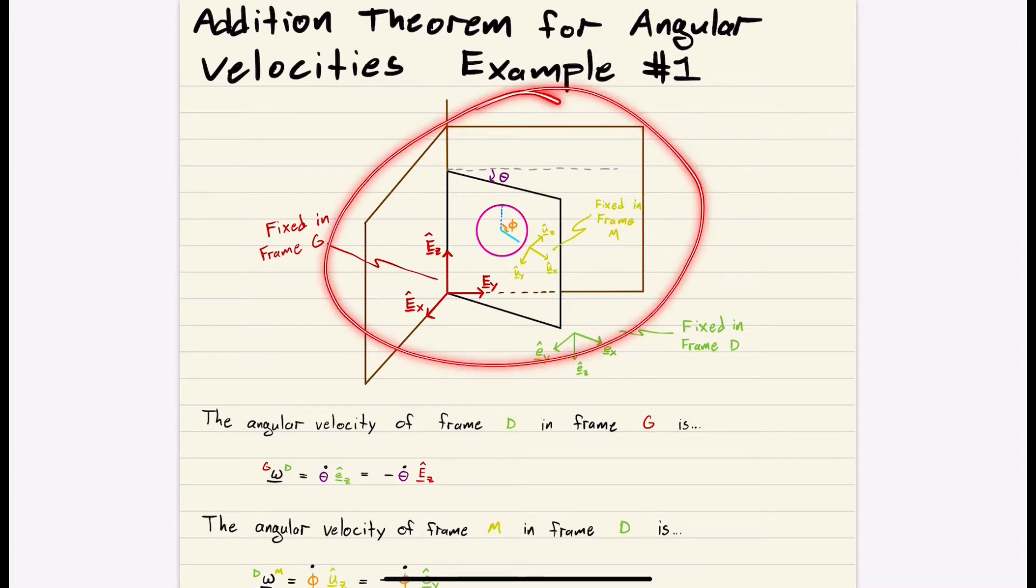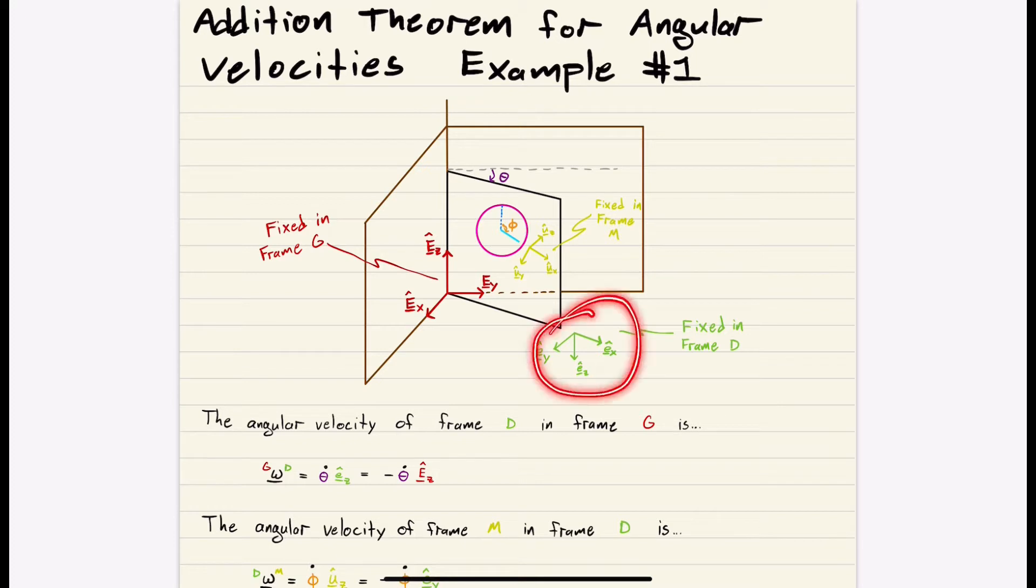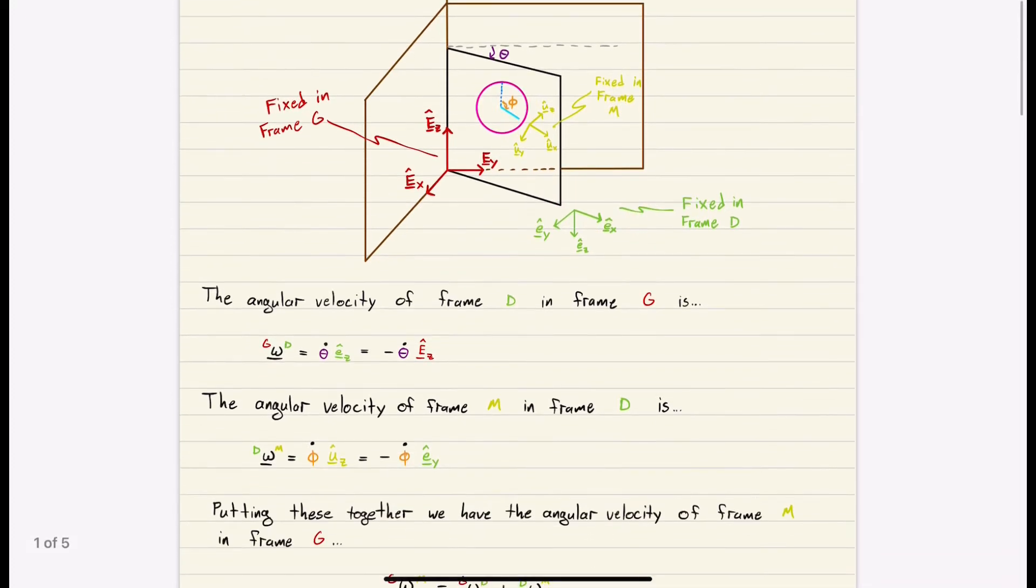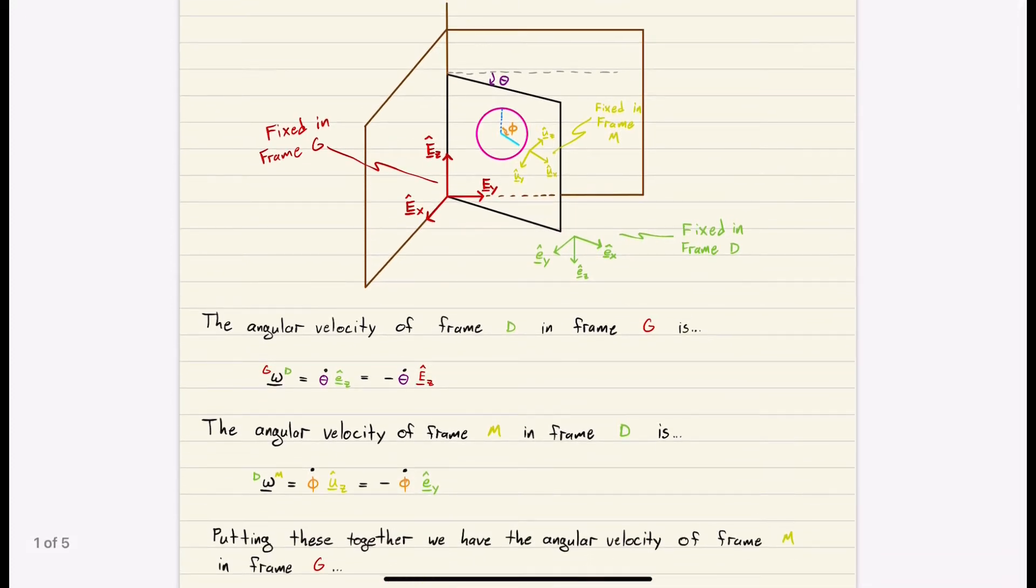So this is the same problem or setup that I used for explaining how to do DCMs. There's a little bit of difference with the green coordinate system that I set up. I moved it around a little bit, so it's not exactly the same, but it's similar.